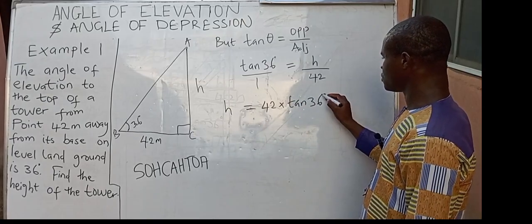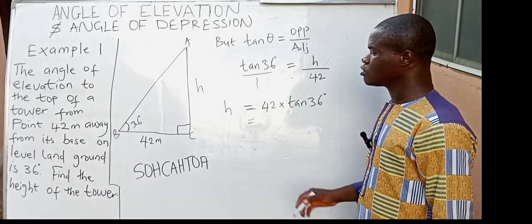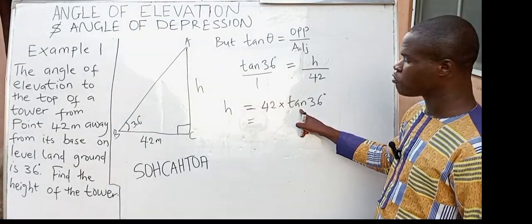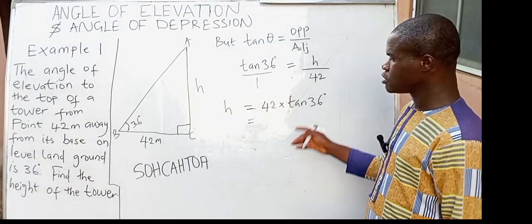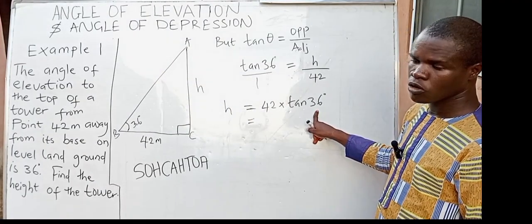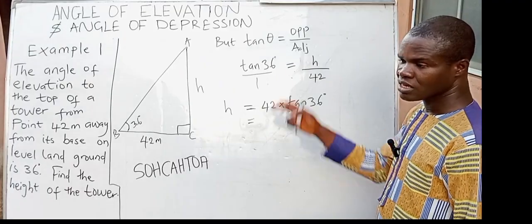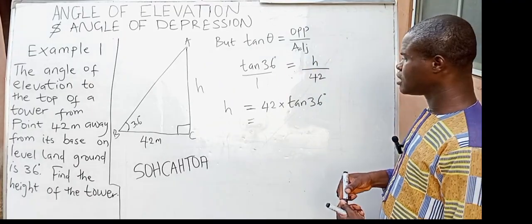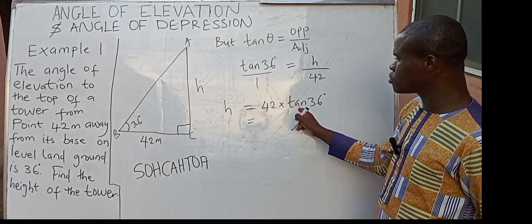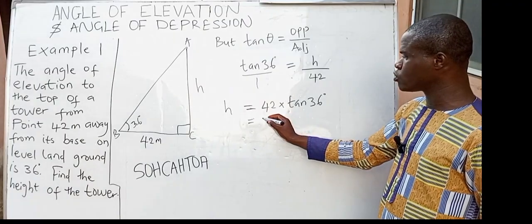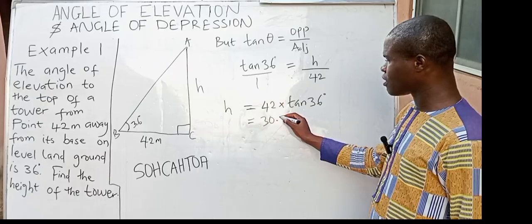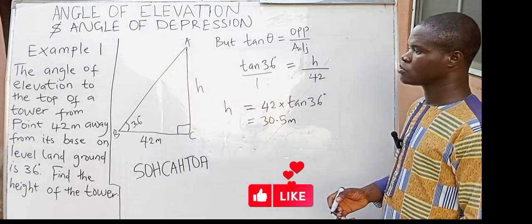So H equals 42 times tan 36°. We can use our four-figure table to read up the value of tan 36°. Simply locate 36 degrees on the vertical axis and locate it under 0 on the horizontal axis, then use that value to multiply 42. You are going to get 30.5 meters. So that becomes our answer.